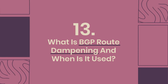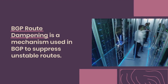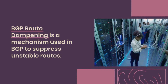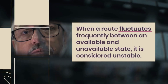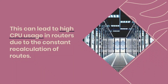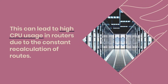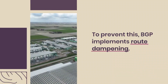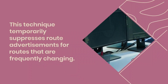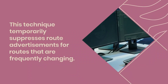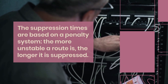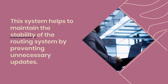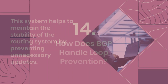What is BGP Route Dampening and when is it used? BGP Route Dampening is a mechanism used to suppress unstable routes. When a route fluctuates frequently between available and unavailable states, it is considered unstable, leading to high CPU usage due to constant route recalculation. BGP implements route dampening to temporarily suppress route advertisements for frequently changing routes. Suppression times are based on a penalty system — the more unstable a route, the longer it is suppressed — helping maintain routing system stability by preventing unnecessary updates.